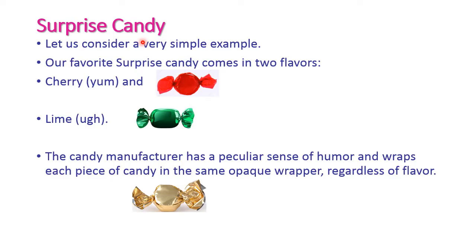Now let us see one simple example for statistical learning: the Surprise Candy World. We have two different types of candies — first is cherry candy and second is lime candy. Cherry candy is very sweet and many people like it. Lime candy is not as sweet and most people don't like it. The manufacturer uses the same opaque wrapper for both, so the user cannot identify whether a particular candy is cherry or lime.